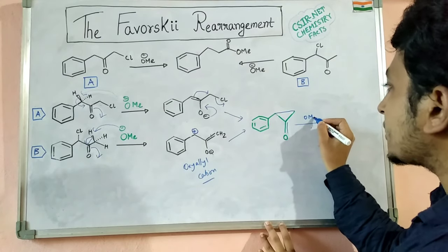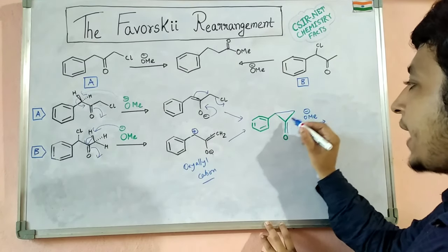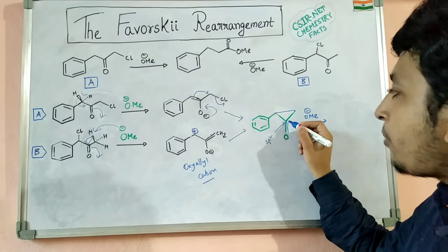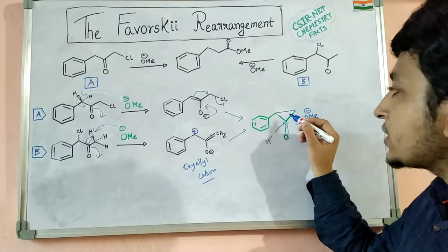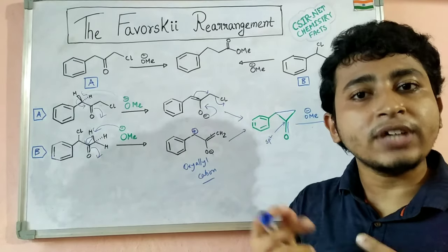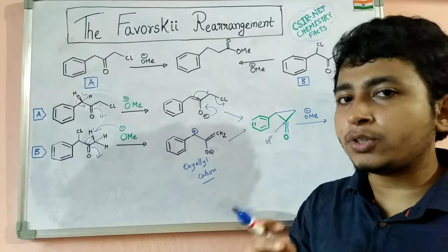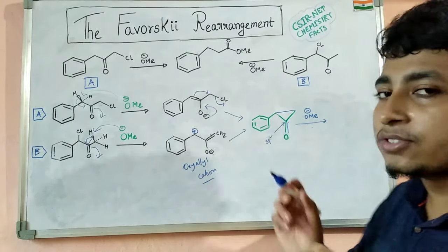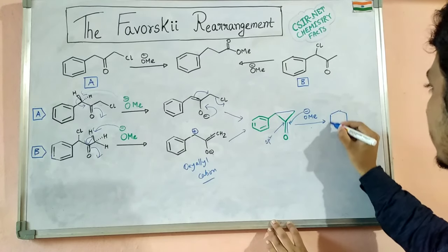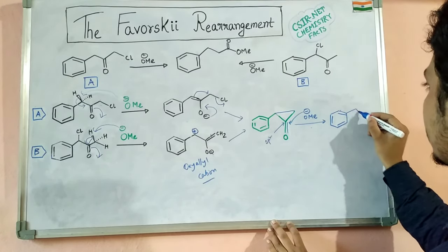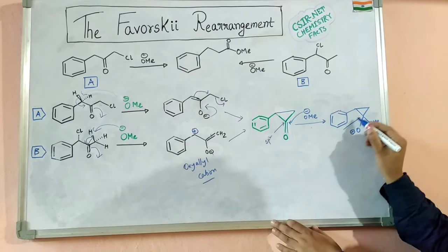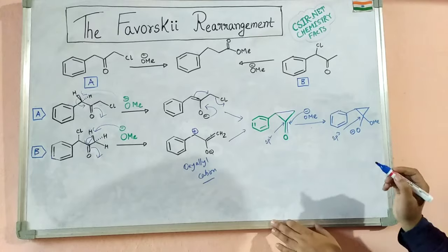Whatever the mechanism, this cyclopropanone intermediate forms and participates in the progress of the reaction. The OMe⁻ present in solution can attack at this position because this carbonyl carbon is sp² hybridized and the bond angle should be 120°, which is reduced to 60° in the ring — creating a huge angle strain. If OMe⁻ attacks here, this carbon becomes sp³ hybridized; the actual bond angle reduces to approximately 109° 28′, and therefore the angle strain is decreased.